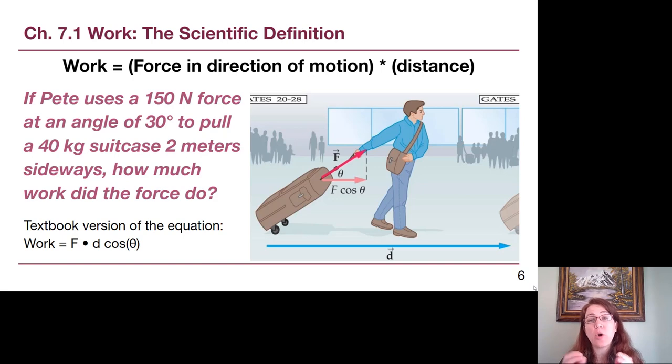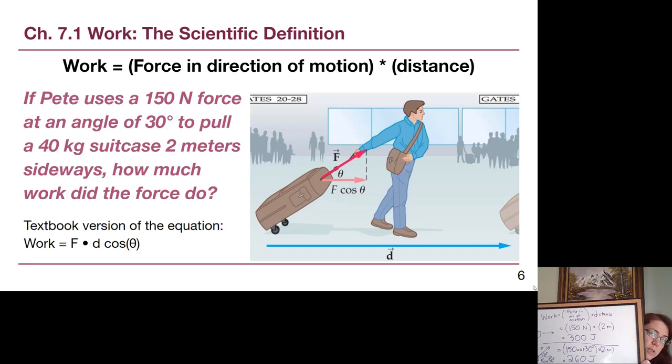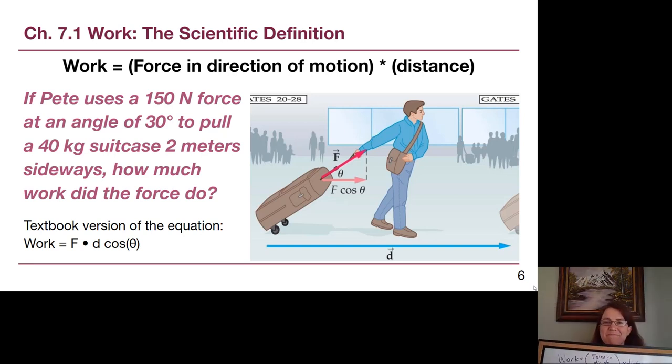Okay, so the only part of the force that is in the direction of motion is the cosine component of that triangle once we break force into components horizontal and vertical. We want the horizontal piece because we're moving horizontally, sideways. So we would take 150 Newtons times the cosine of 30 degrees. And then we would multiply that component of force times the full distance of 2 meters. We could use the textbook version of the equation and we would get the same result. We would just take 150 times 2 times the cosine of 30 degrees. But it really is still useful to write the version that we talked about at the top of the slide.